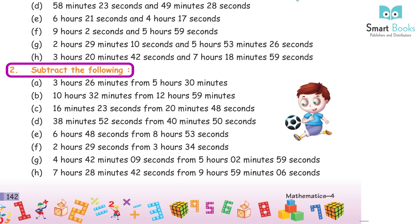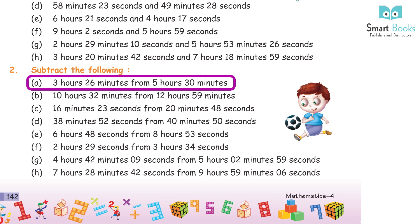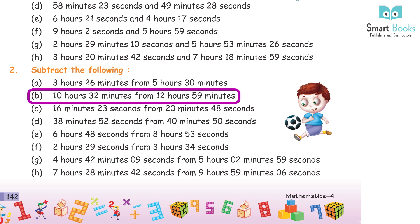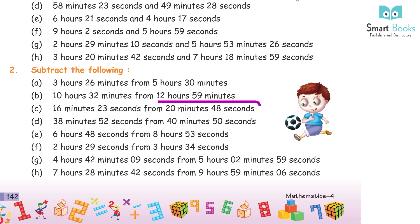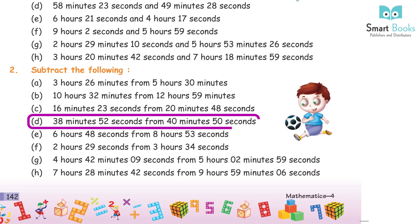Question 2: Subtract the following. A. 3 hours 26 minutes from 5 hours 30 minutes = 2 hours 4 minutes. B. 10 hours 32 minutes from 12 hours 59 minutes = 2 hours 27 minutes. C. 16 minutes 23 seconds from 20 minutes 48 seconds = 4 minutes 25 seconds. D. 38 minutes 52 seconds from 40 minutes 50 seconds = 1 minute 58 seconds.